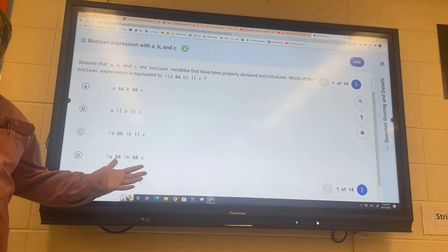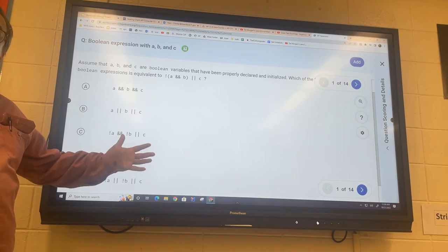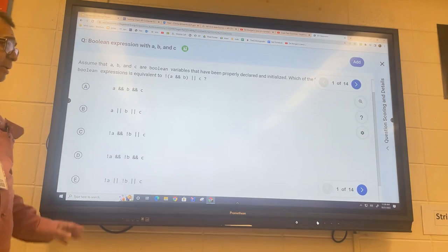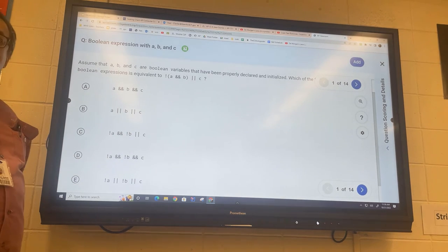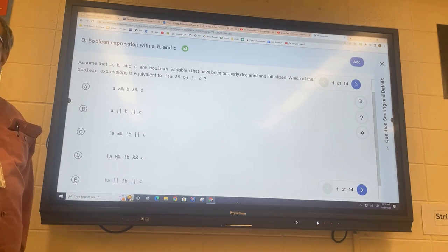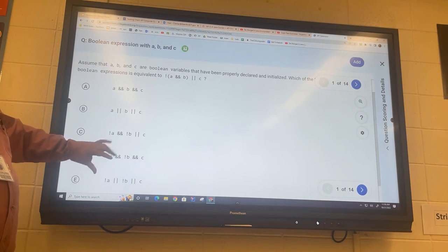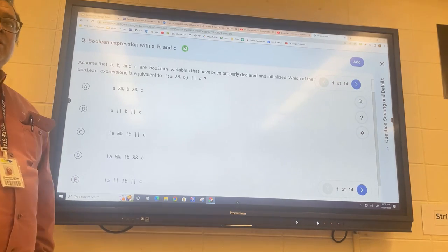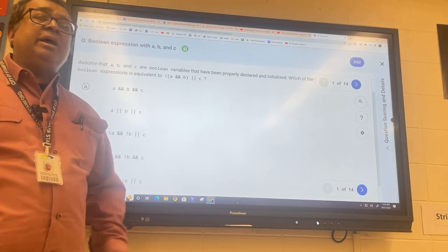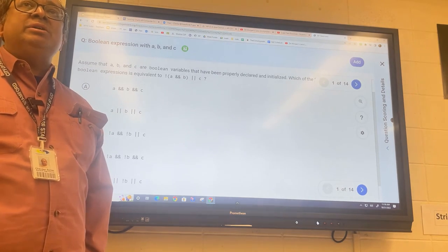So De Morgan's is fast, truth table is slow. But truth table is a hammer. If it doesn't work, you can hit it with a bigger hammer—truth table is a bigger hammer. De Morgan's involves thinking, so that's why it reduces the amount of time you need to find the answer.